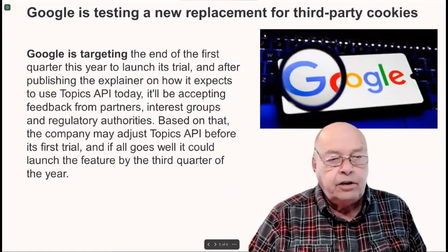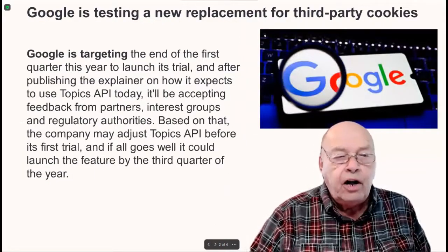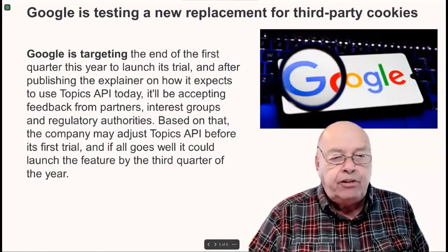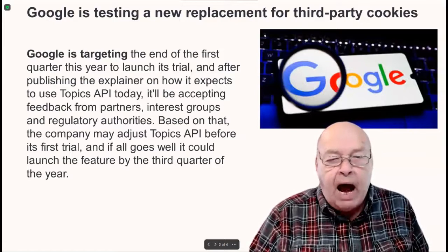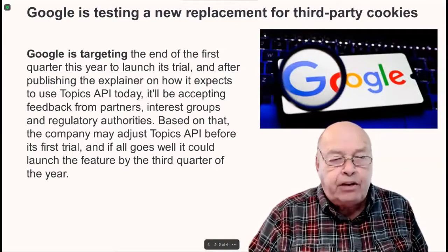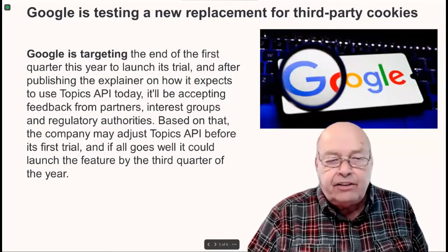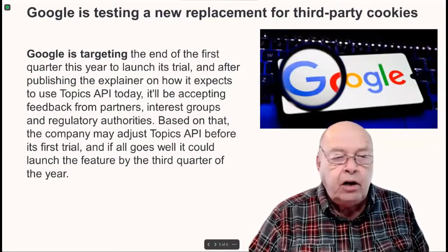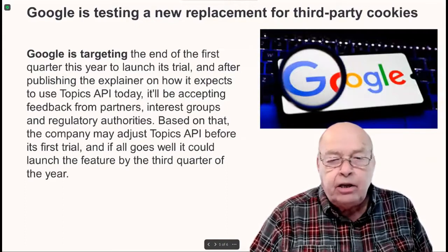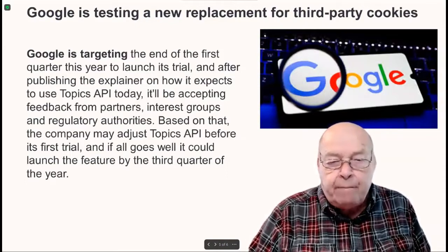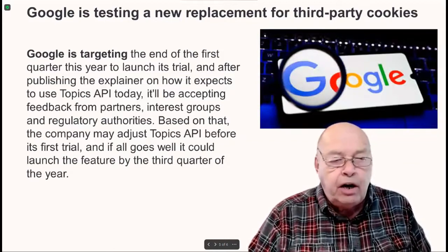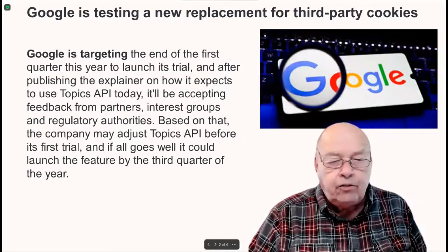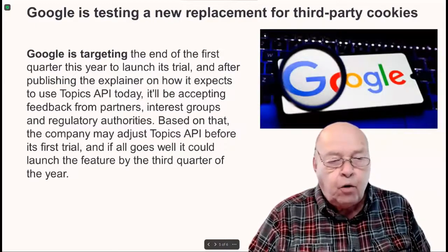Google is targeting the end of the first quarter this year to launch its trial. After publishing the explainer on how it expects to use Topics API, it'll be accepting feedback from partners, interest groups, and regulatory authorities. Based on that, the company may adjust Topics API before its first trial, and if all goes well, it could launch the feature by the third quarter of this year.